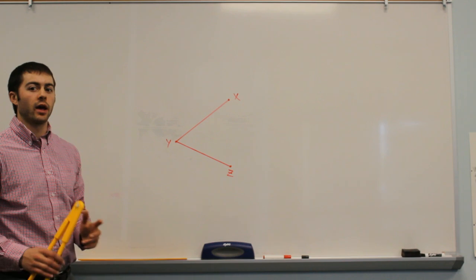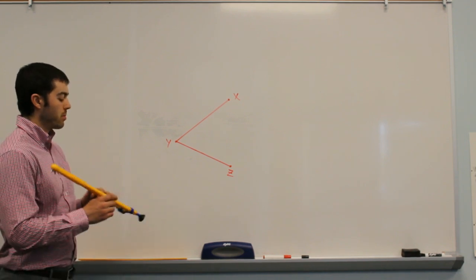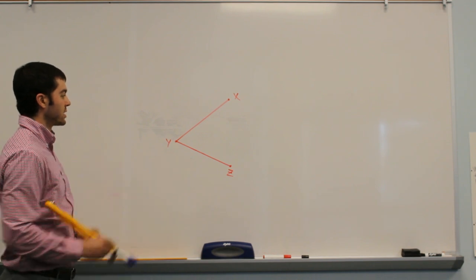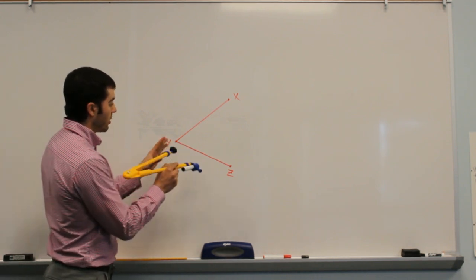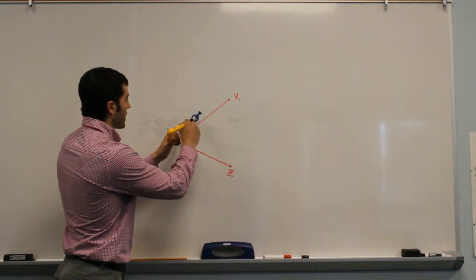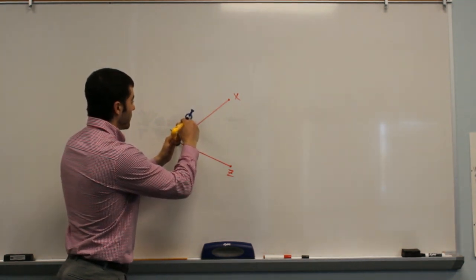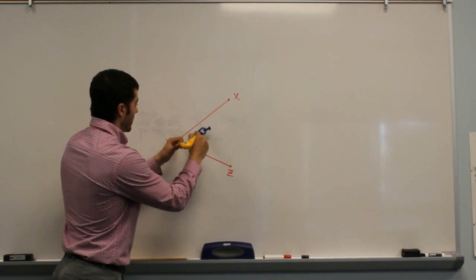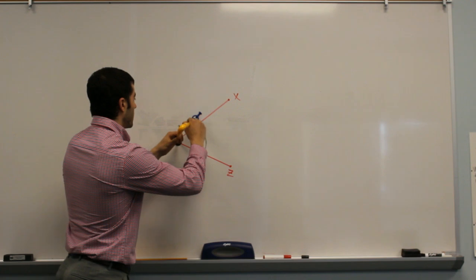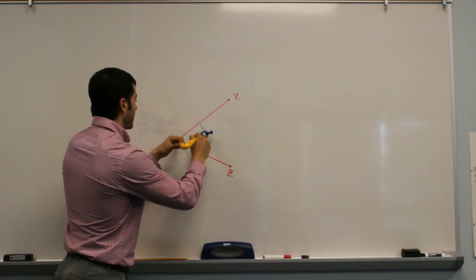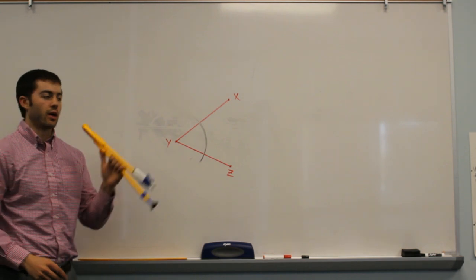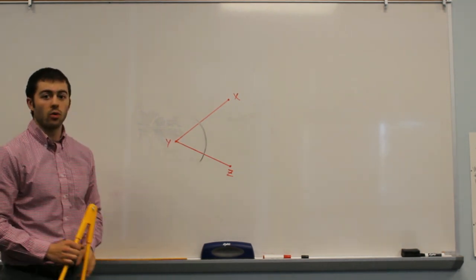So if we already have an angle, the first step in bisecting the angle is going to be to swing an arc through this angle. The point of our compass is going to go on the vertex of the angle, and then we're going to make ourselves an arc using our compass that goes through both lines — both line segments that make up this angle. So we've made ourselves an arc here that goes through our angle.